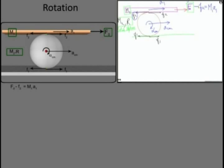Next, for the translational motion of the sphere: what forces act on the sphere horizontally? Both F1 and F2 act. We assumed F1 is towards the left, so the equation is F2 minus F1 equals M2 times ACM, taking right direction as positive.